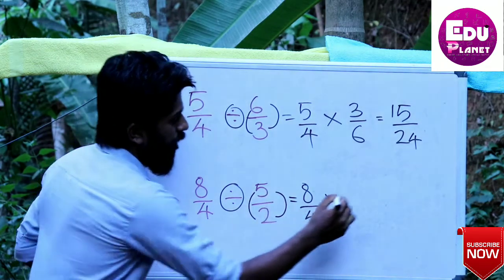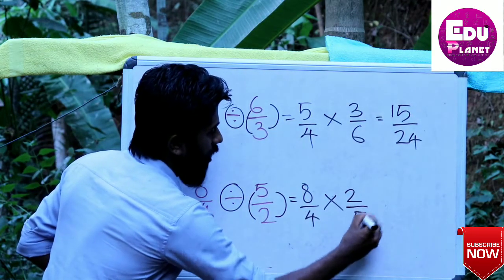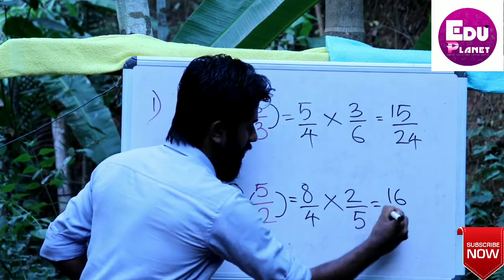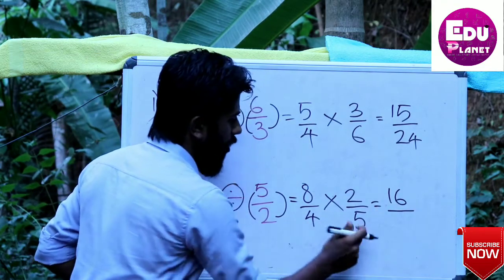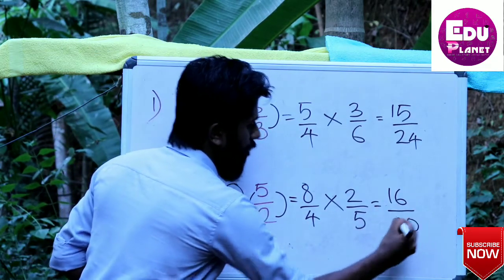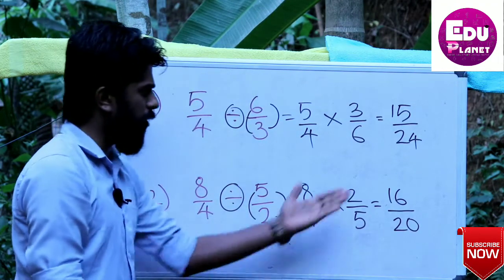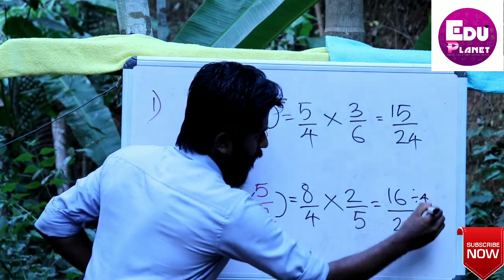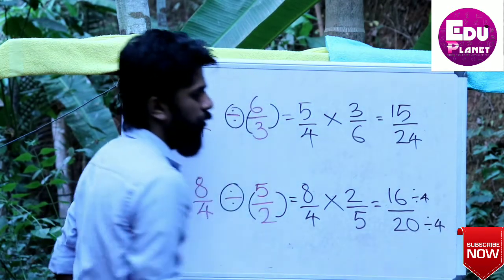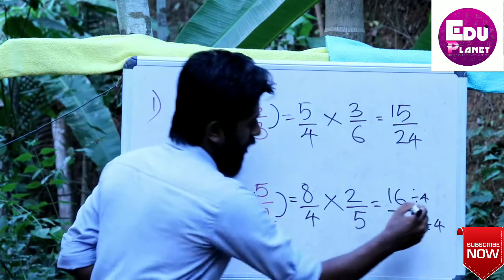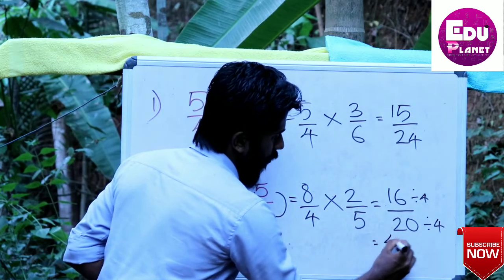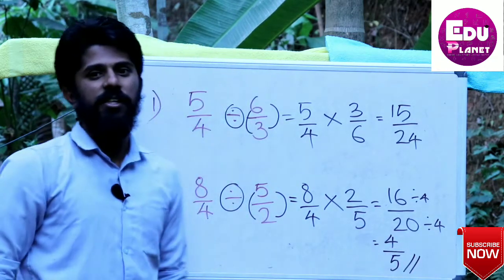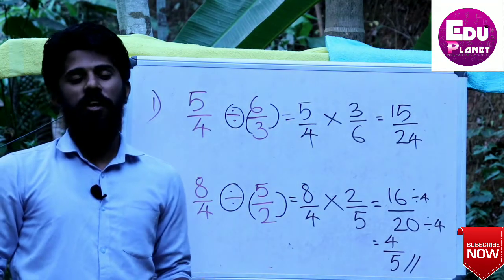For division with 2 and 5: we use cross multiplication and reciprocal. 8 into 2 is 16, 4 into 5 is 20. Then 4 and 4: 4 into 4 is 16, 6 to 4 is 4 times, 20 to 4 is 5 times. Therefore the answer is 4 by 5.